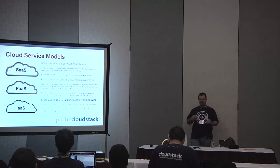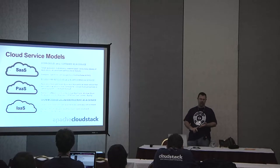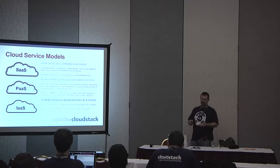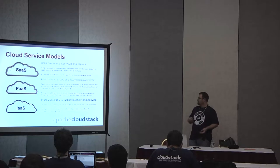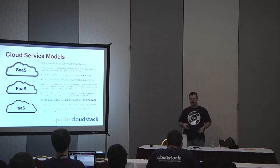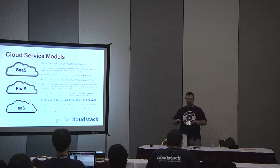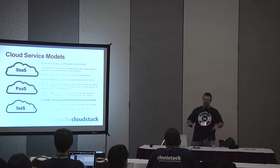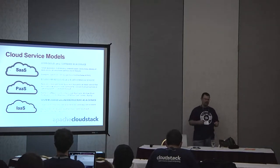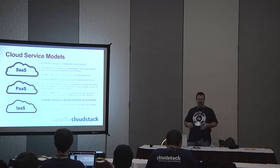Everybody in here is probably using some form of software as a service — Gmail, Dropbox, Flickr, Salesforce.com, 37signals. Platform as a service includes things like OpenShift, AppFog, Google App Engine — where I want to write my own application and run it, but I don't want to care about the operating system or anything under my platform layer. And then what we're discussing today: infrastructure as a service, where you're abstracting hardware from users — things like Amazon Web Services EC2, Google Compute, OpenStack, CloudStack, and Eucalyptus.